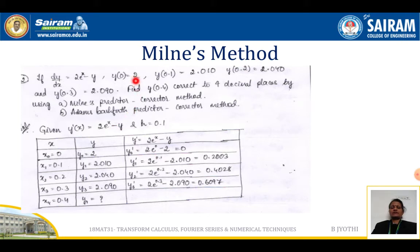Y values are respectively given by 2, 2.010, 2.040 and 2.090. This has been tabulated and we need to compute the y dash values by using the given formula. How to calculate that?